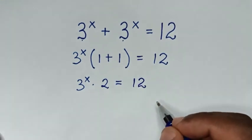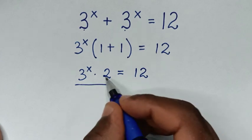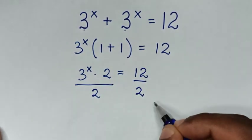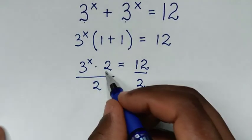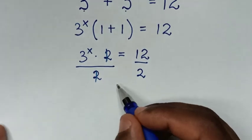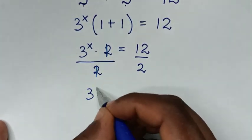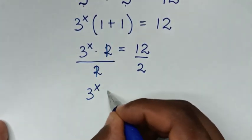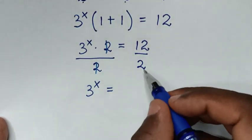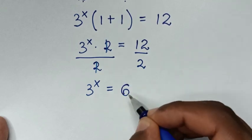In the next step we'll divide by 2 on both sides. These will cancel, and it will be 3 power x is equal to 12 divided by 2, which is 6.